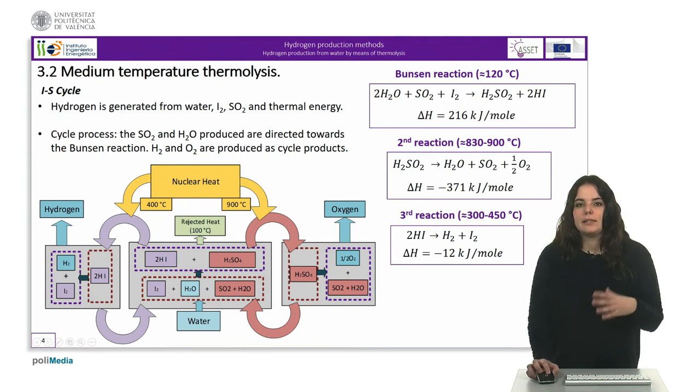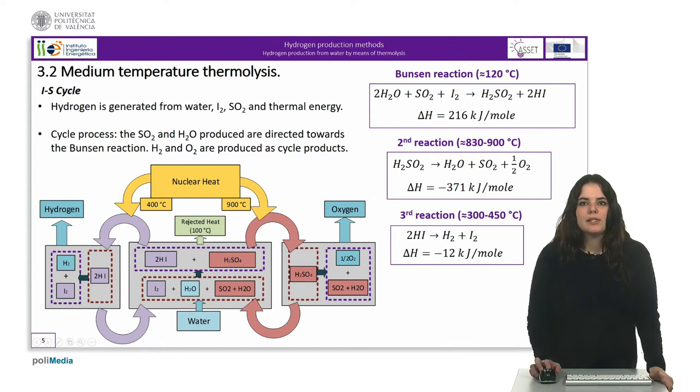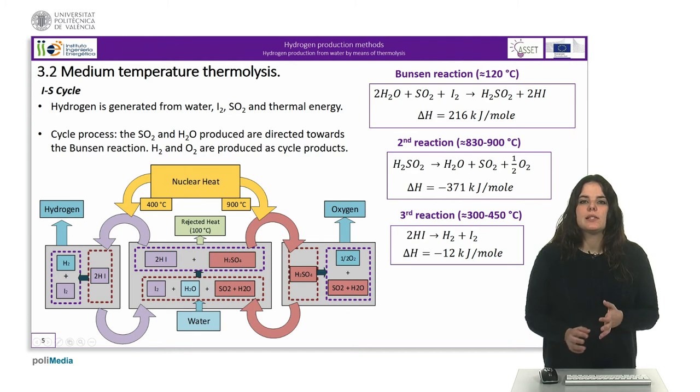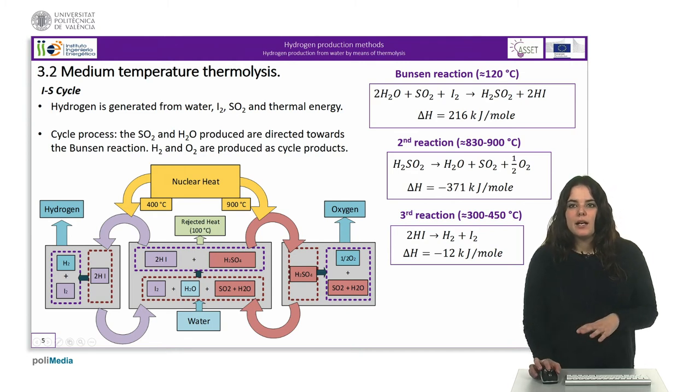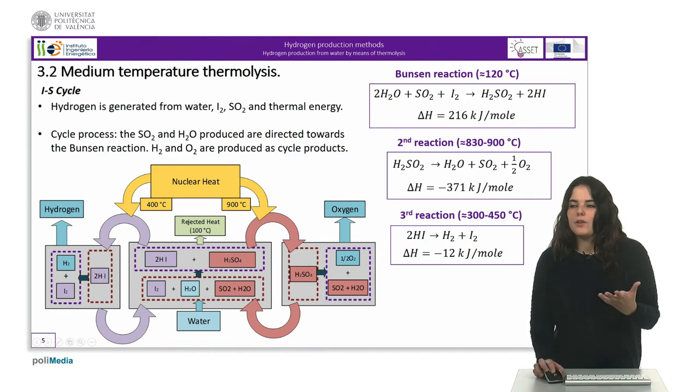To optimize this cycle it is necessary to introduce an excess of water and iodine. Two distillation processes are carried out. The first produces hydrogen iodide at 230°C. With the separated HI, its decomposition proceeds according to the third reaction at 360°C and that is where hydrogen is obtained.